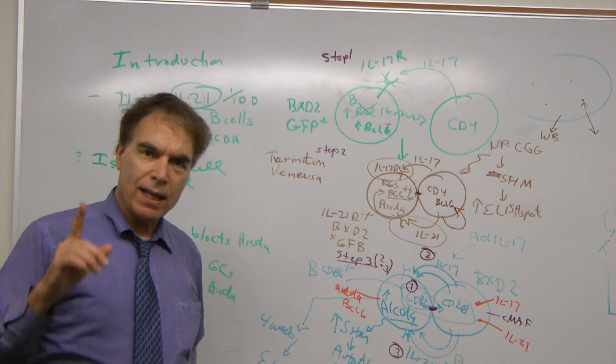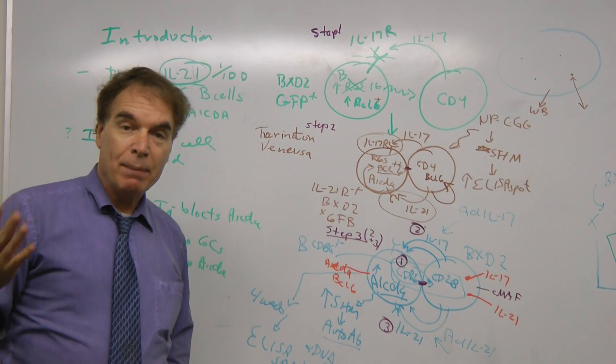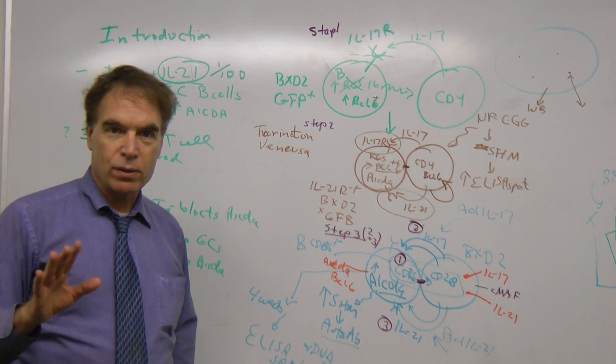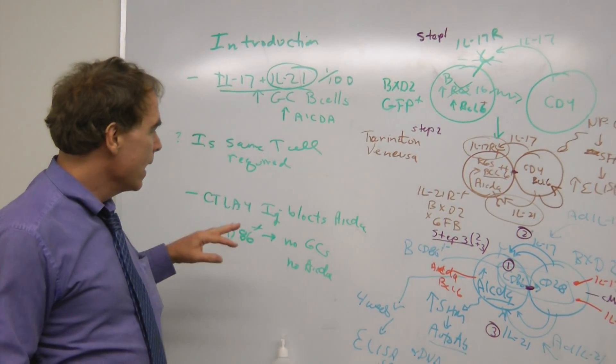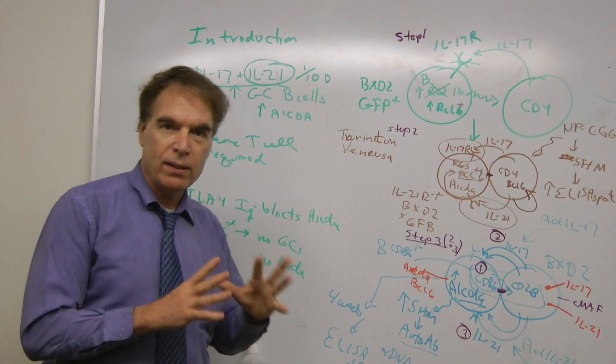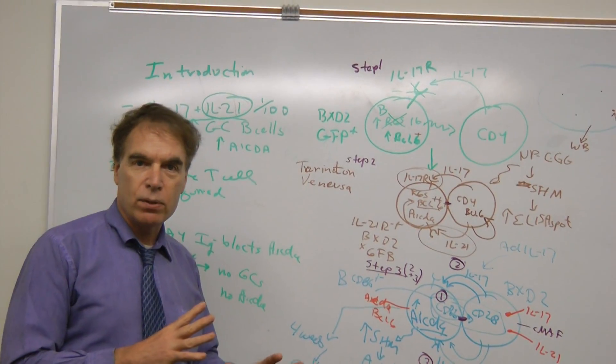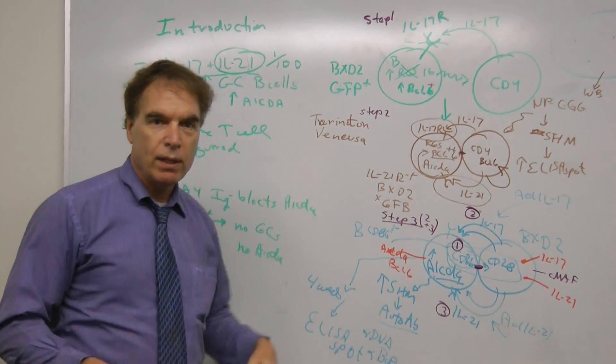Now the interesting thing is IL-17 is produced in much higher amounts than IL-21, so it's hard to see these IL-21 cells. And that's the interesting thing. You'll hear later whether the same cell produces both of them or whether they come from two different cells.